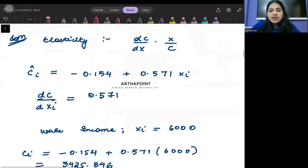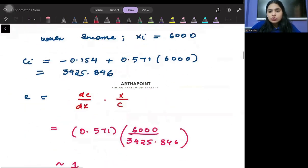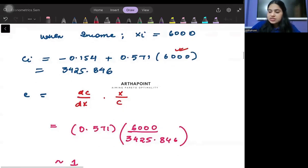When I will just plug in this value, I am leaving it up to you to calculate. When you will plug in 6,000, you should be getting 3,425.846.